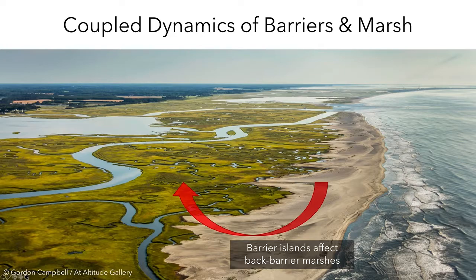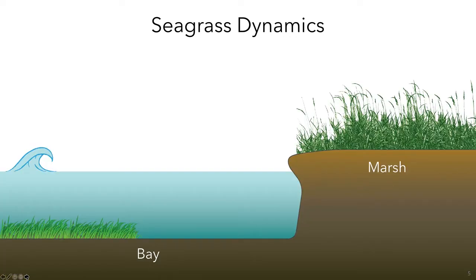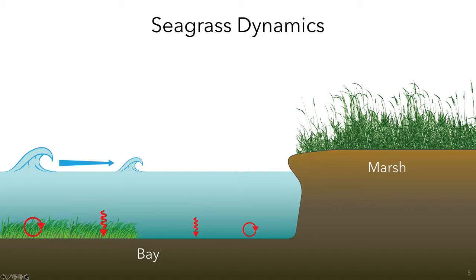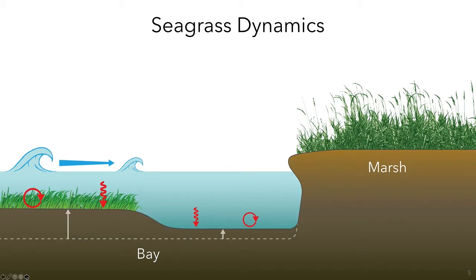Looking at the back-barrier bays, seagrass can also potentially impact the evolution of the coupled system by altering sediment dynamics and waves. Seagrass reduces wave height in the bay, therefore reducing wave energy reaching the marsh edge and shorelines. Additionally, seagrass attenuates wave and current shear stresses acting on the sediment bed, reducing resuspension and enhancing deposition of fine sediments, both within the meadow itself and in the surrounding bare areas of the bay. These effects, along with the production of organic matter within the meadow, tend to result in seagrass beds having shallower equilibrium depth, and bare portions of the bay will also tend to be shallower in the presence of seagrass.